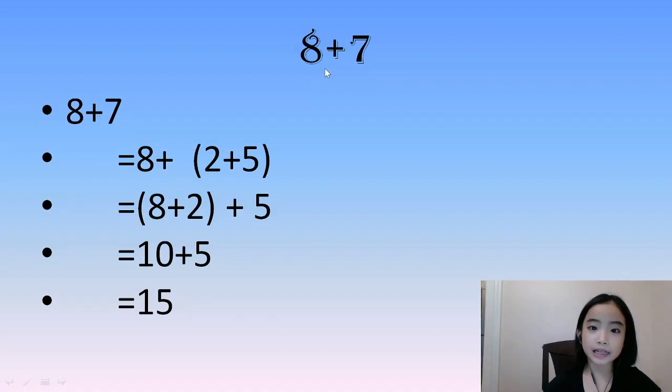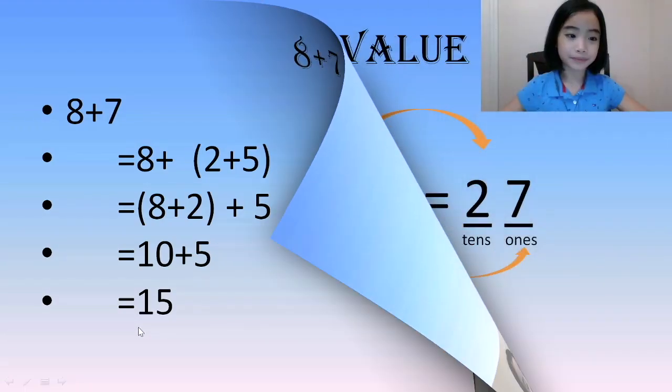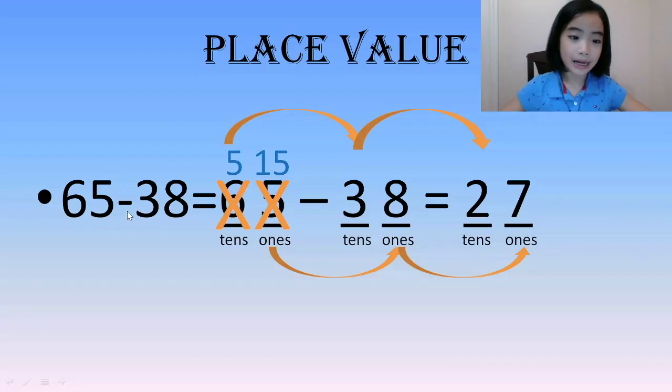So, 8 plus 7 equals 15. 65 minus 38. For 65, we have 6 tens and 5 ones. And for 38, we have 3 tens and 8 ones. We cannot subtract 8 from 5.